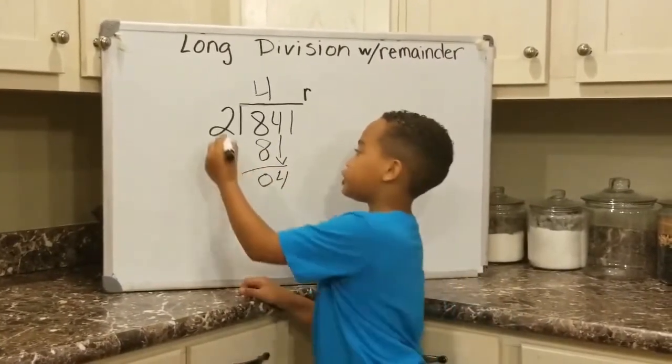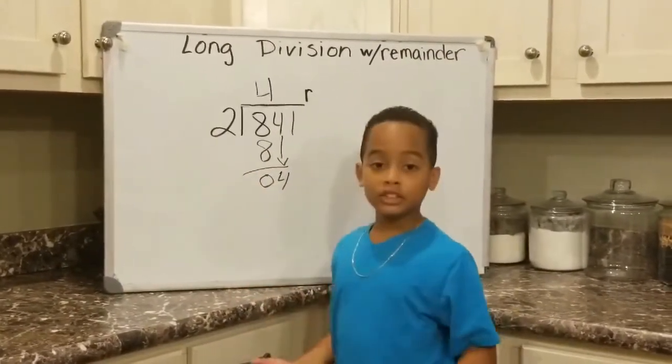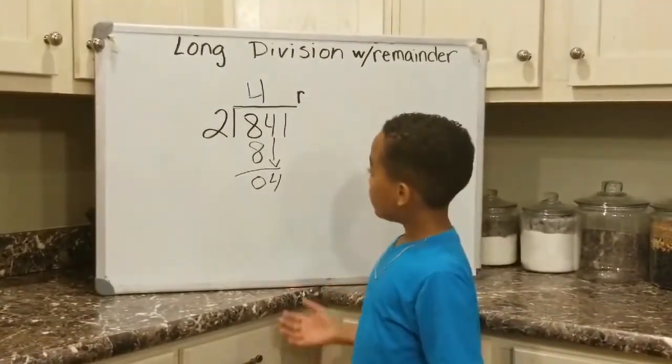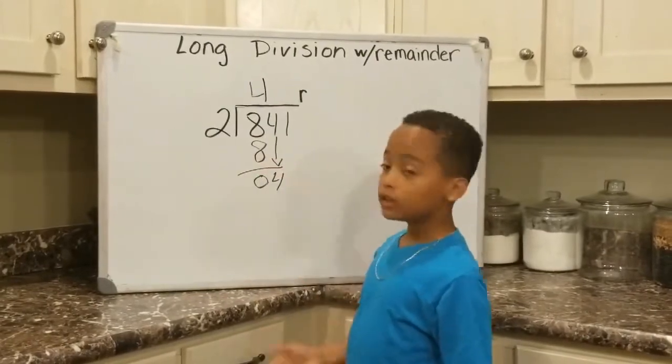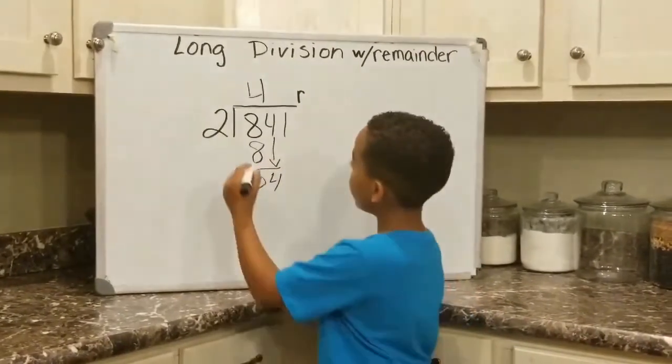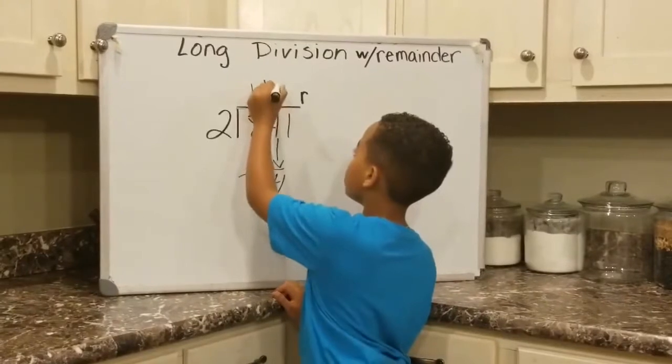Now, we're going to see if 2 can go into 4, which it can, but how many times? 2, 4. 2 can go into 4 twice. We're going to write the 2 above this 4.